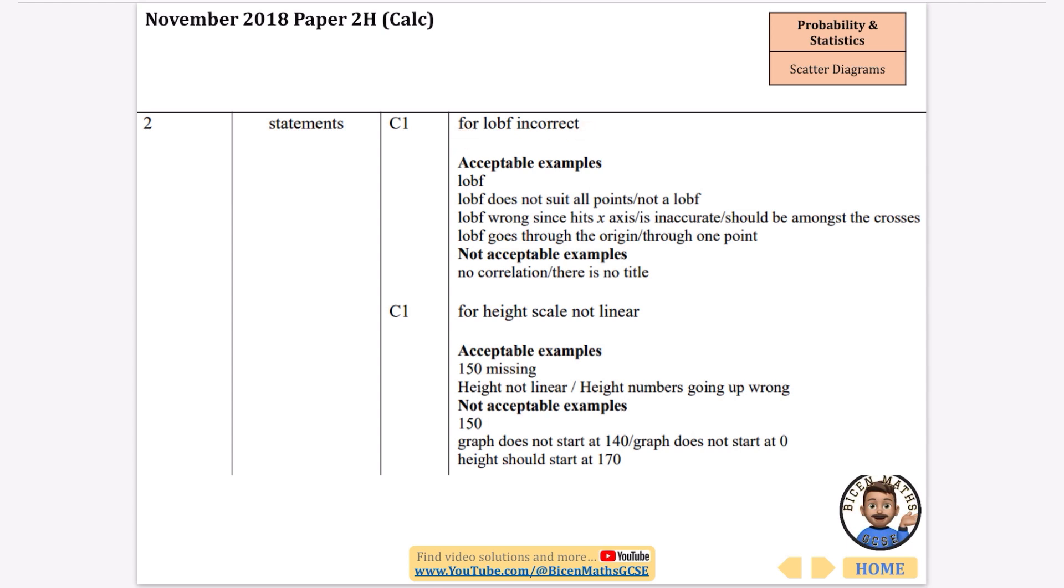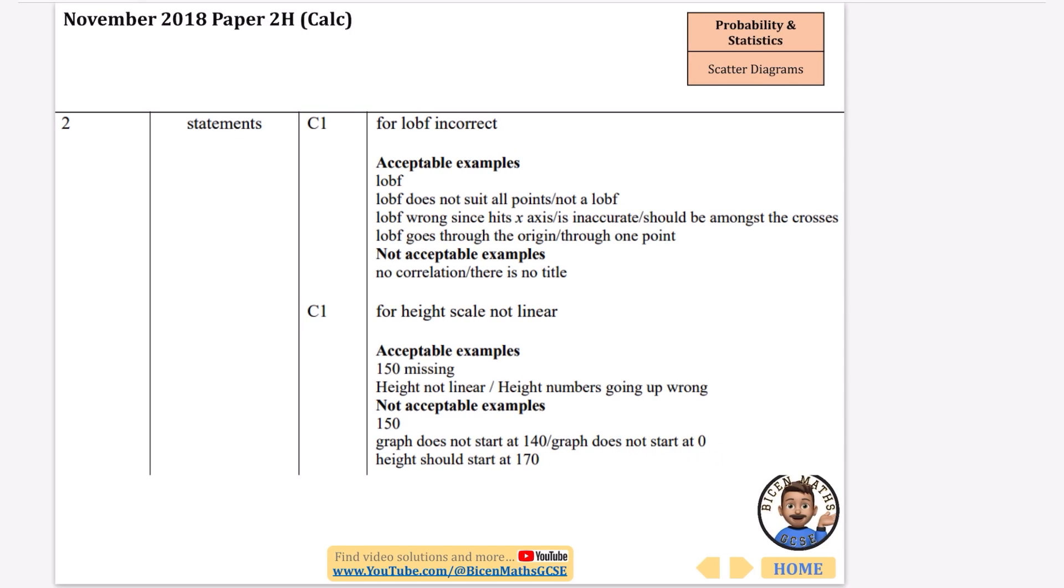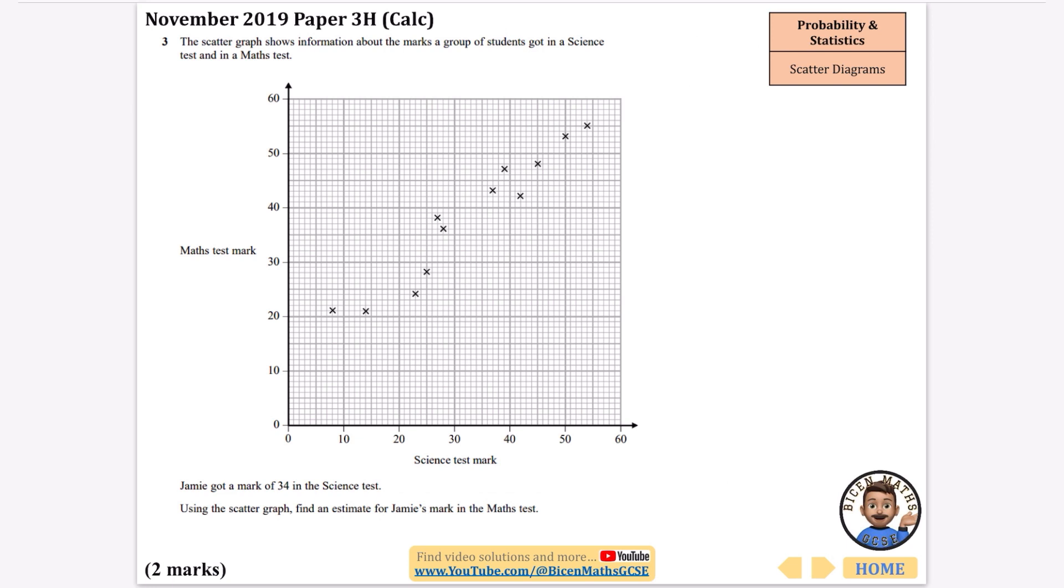So the line of best fit is incorrect. LOBF is line of best fit. The 150 is missing or the height isn't linear. They wouldn't accept there's no title. The graph does not start at zero which is interesting. They wouldn't accept those. Again question three, you can expect to see these quite early on in the paper.